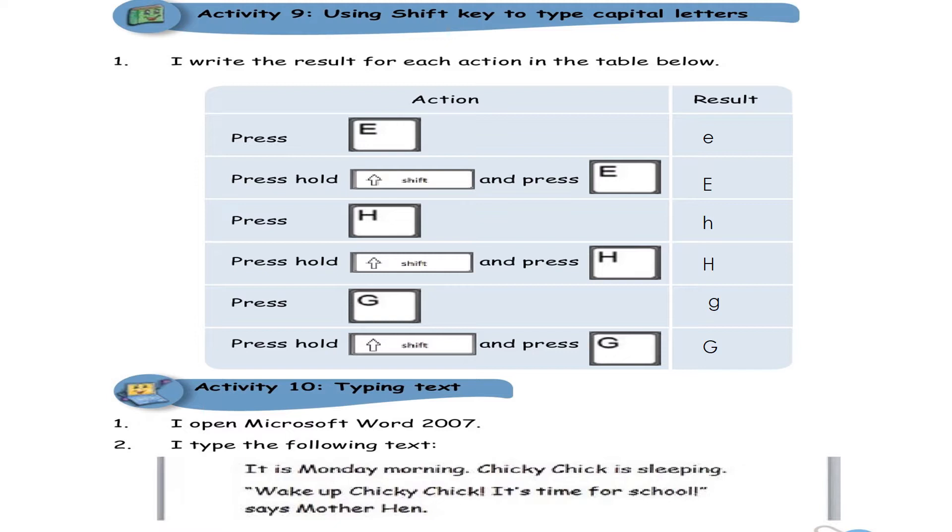If you're going to press on the letter E, you are going to get what? Small letter e. See the result over there. But if you press and hold the shift key and press the E key, you are going to have a capital letter E.